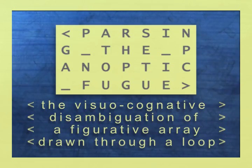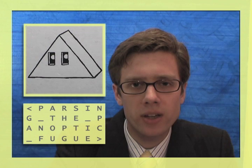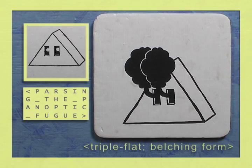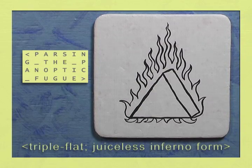Parsing the panoptic fugue, the visual-cognitive disambiguation of a figurative array drawn through a loop. Now, let's take a step backwards. We return to the keystone figure of the triple flat. In the belching form of the triple flat, the two unilluminated holes spew forth large clouds of oily black smoke. These murky masses are a threatening sign of the dangers of polluted sockets. If this situation were not promptly remedied, the result would certainly be the juiceless inferno form of the triple flat.